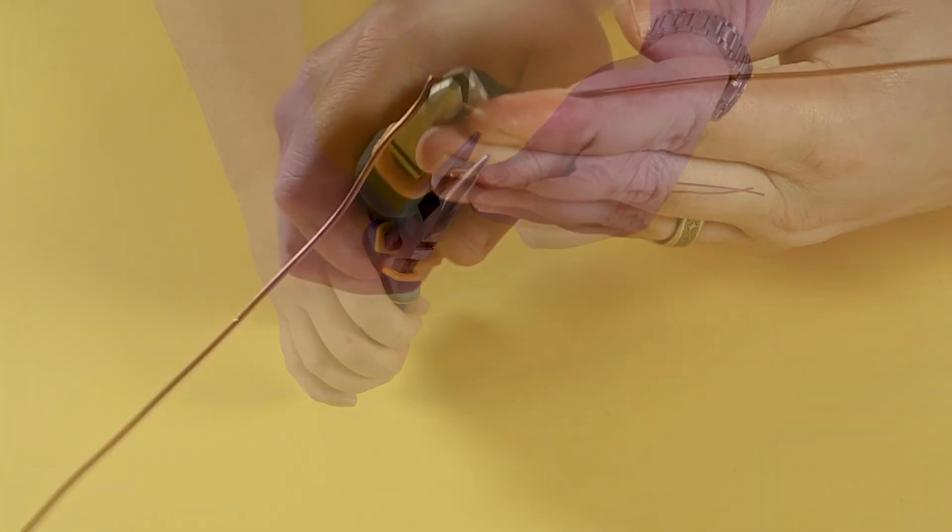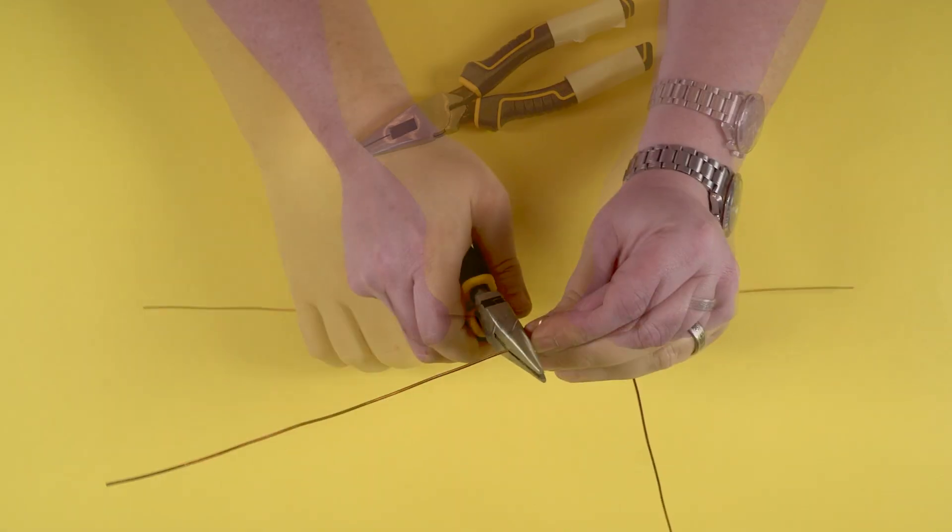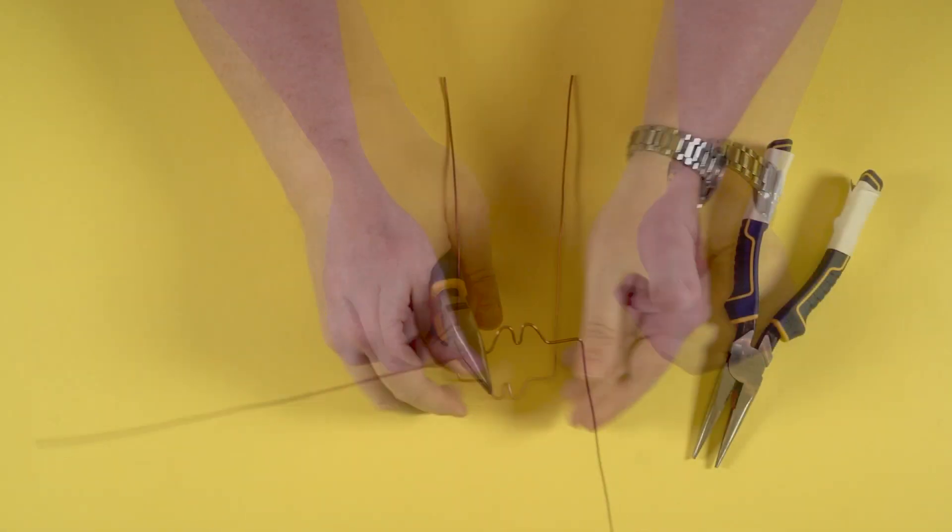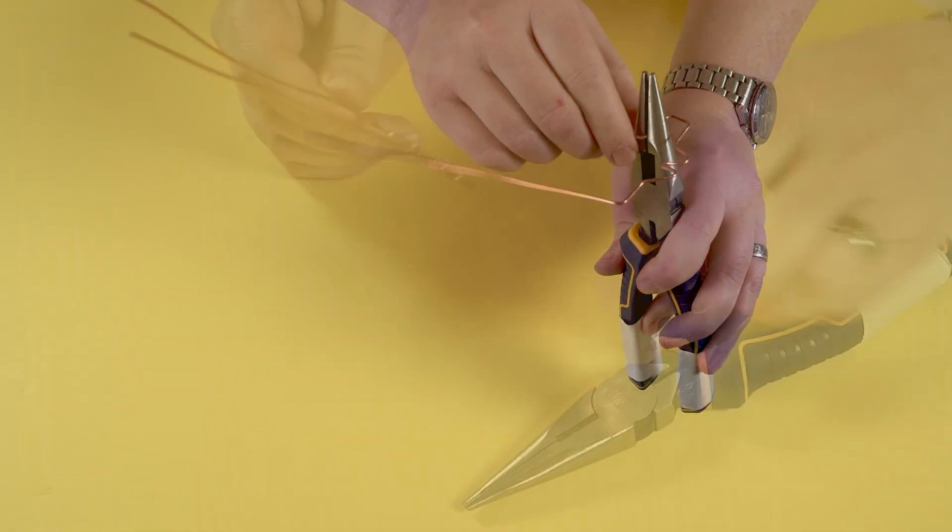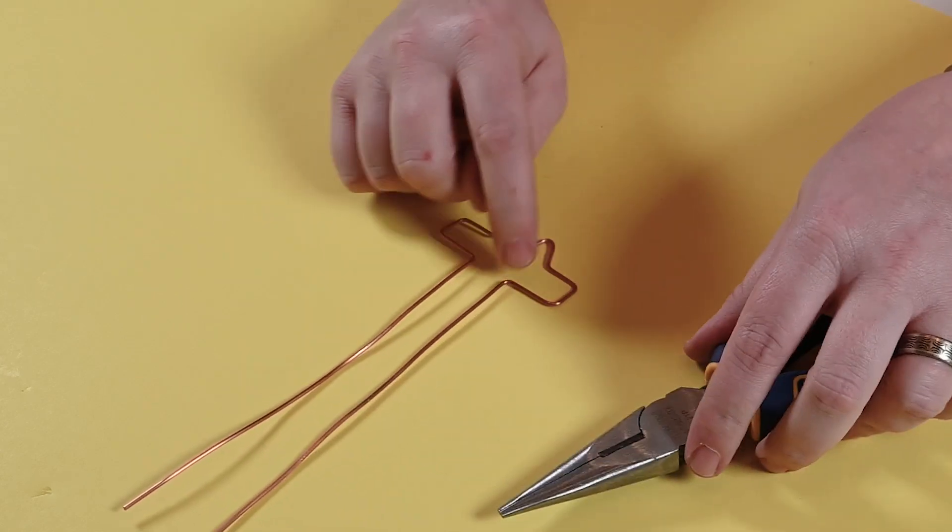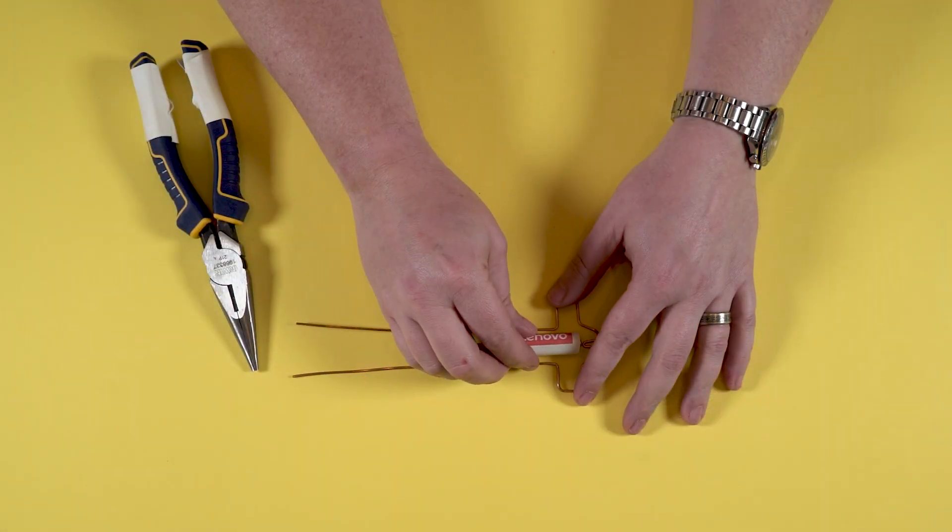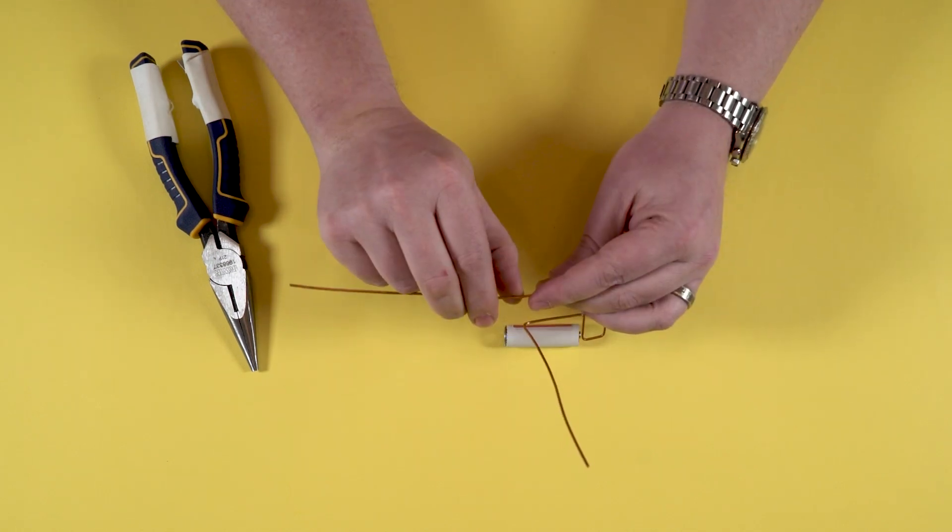I'm going to take my pliers and I'm going to use those to make this bend here very tight to start with. And y'all, this doesn't have to be completely exact. It's just a little easier at the end to get your dancer dancing if everything is as close to flat, straight, and well balanced as possible.